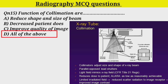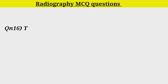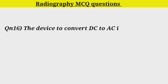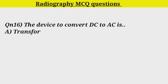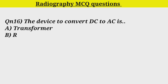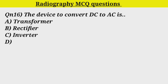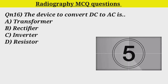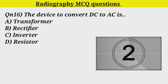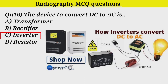Q16. The device to convert DC to AC is: Option A. Transformer. Option B. Rectifier. Option C. Inverter. Option D. Resistor. Correct answer is C. Inverter.